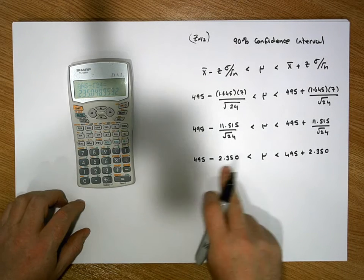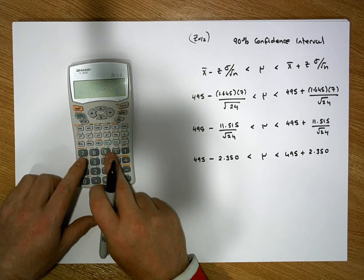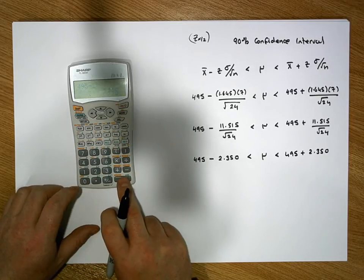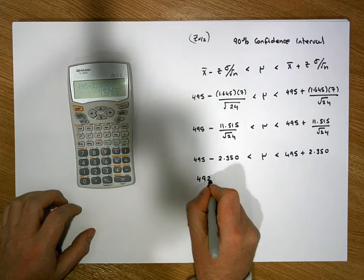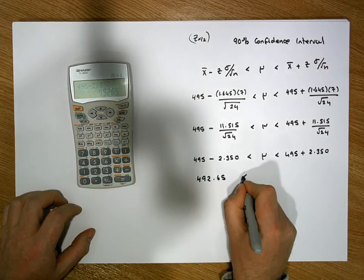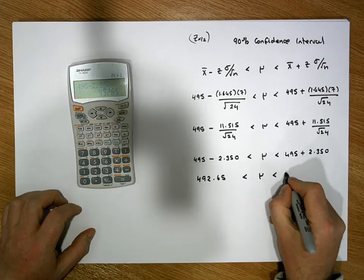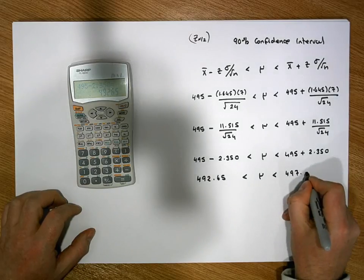So let's do the subtraction. So it's 495 minus 2.350, gives us a value of 492.65, must be less than mu, must be less than, but when we add this onto this, it gives us 497.35.